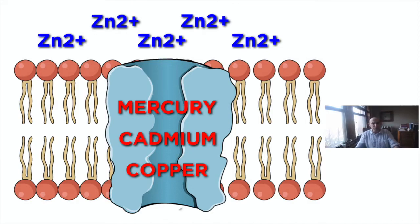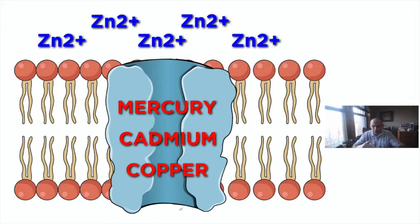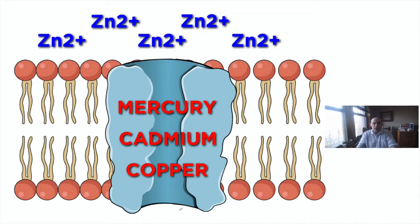We know that heavy metals — mercury, cadmium, copper — displace the zinc. And if these metals get into these channels, it alters the channel proteins where the doors can't open and the doors can't close. It alters the protein structure so we don't get the passageway to get nutrients in. Mercury can block thousands of ions of zinc, and cadmium can block thousands of ions of zinc as well.